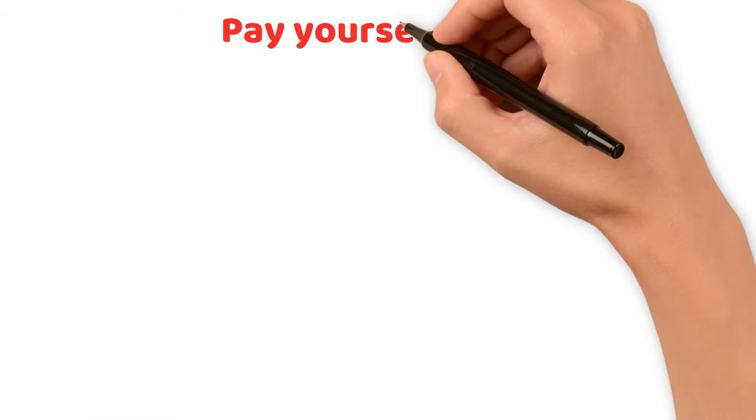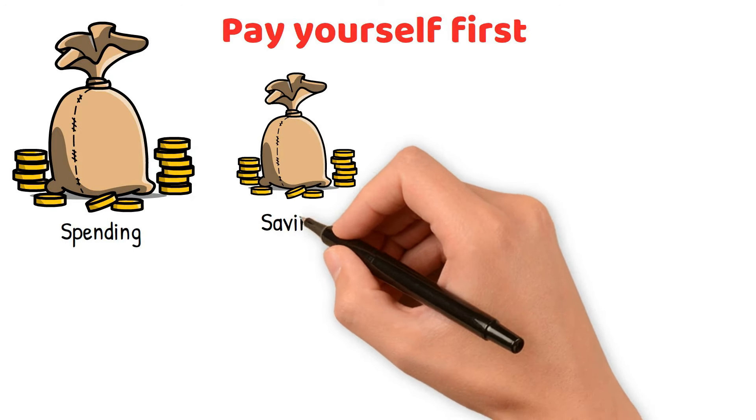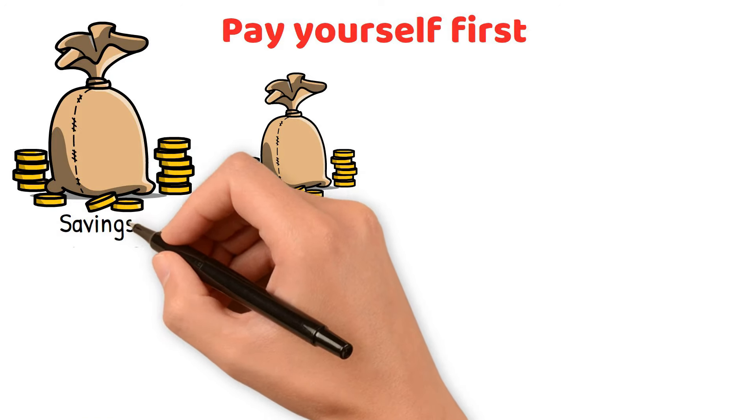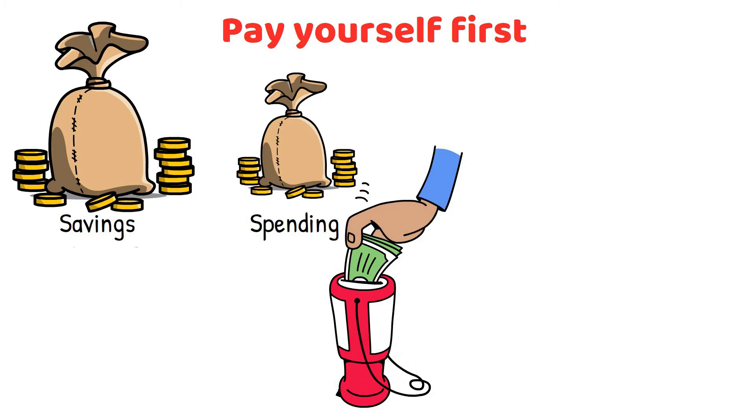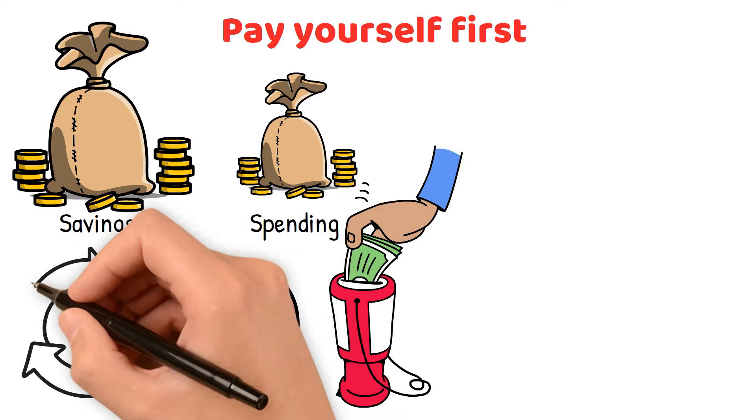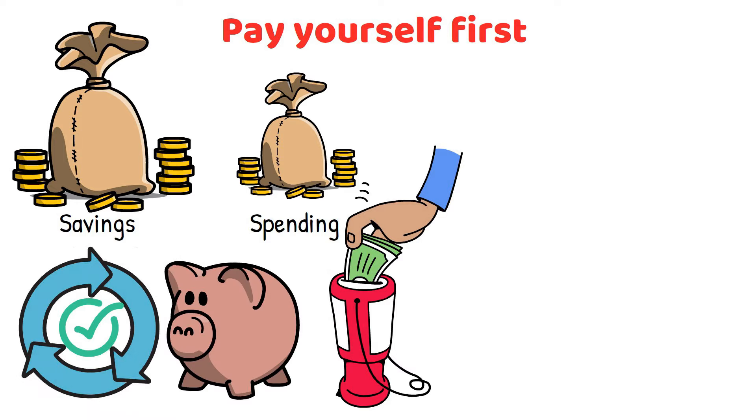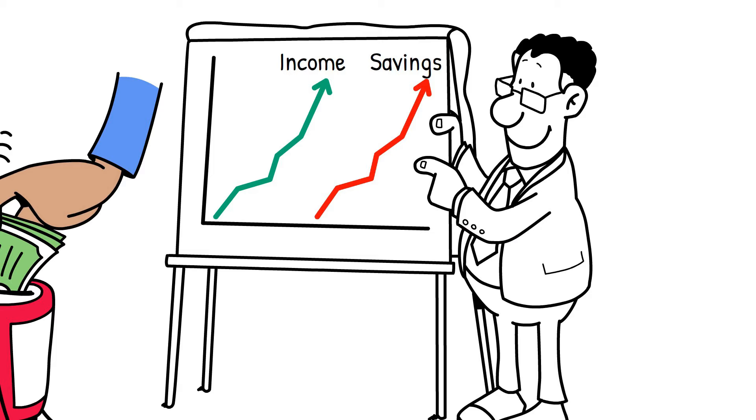Another key habit is to pay yourself first. Instead of saving what's left after spending, flip that around. Save first, then spend what's left. This approach helps you prioritize savings and ensures that you consistently set aside money for your future. Automating your savings with every paycheck makes this process even easier. And as your income grows, try to increase your savings rate accordingly.